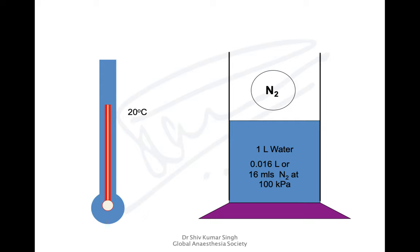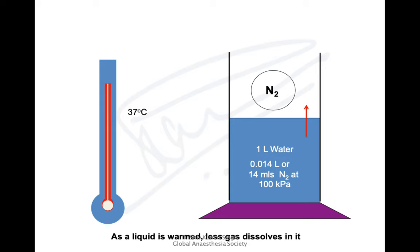For example, nitrogen at 20°C in one liter dissolves 16 mL at 100 kPa (atmospheric pressure of 760 mmHg). But if temperature is increased, this amount falls to 14 mL of nitrogen. So as temperature increases, the amount of dissolved gas reduces.